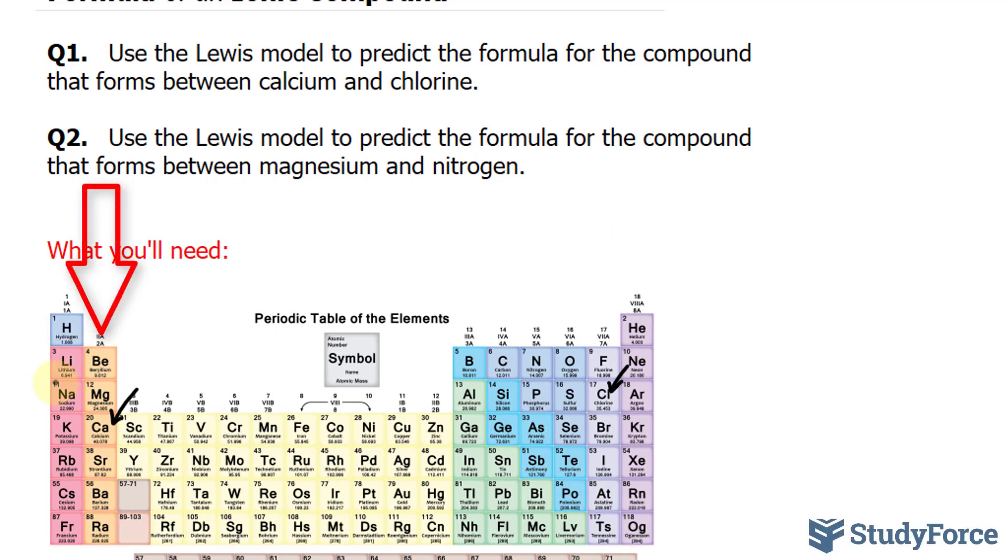Now given that calcium is in the second group, we'll write down Ca with two dots, those represent the valence electrons. And of course you can represent these electrons here, down here, or on the left, it doesn't really matter.